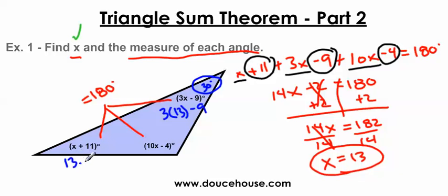We have 13 plus 11, well that's 24 degrees. And then we have 10 times 13 minus 4. Well, this is 130. 130 minus 4 is 126 degrees. And we're done.